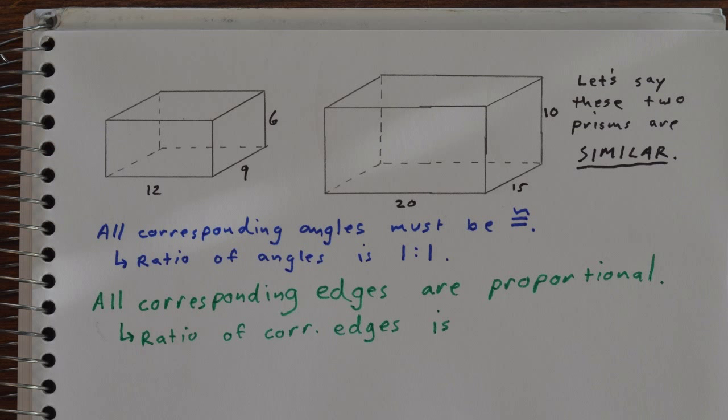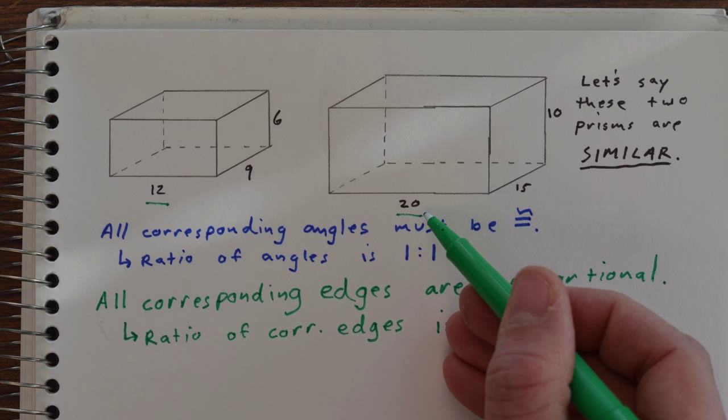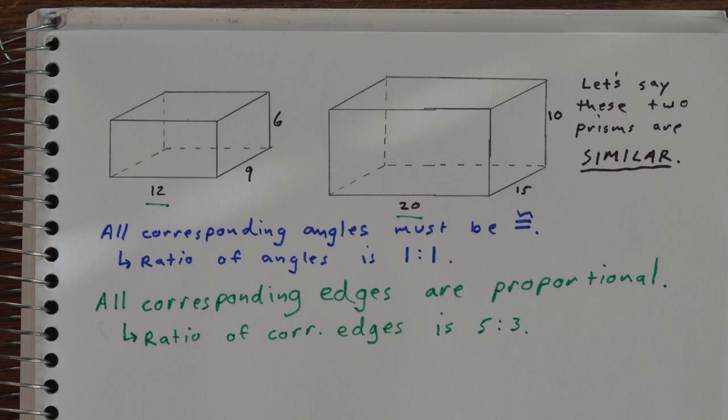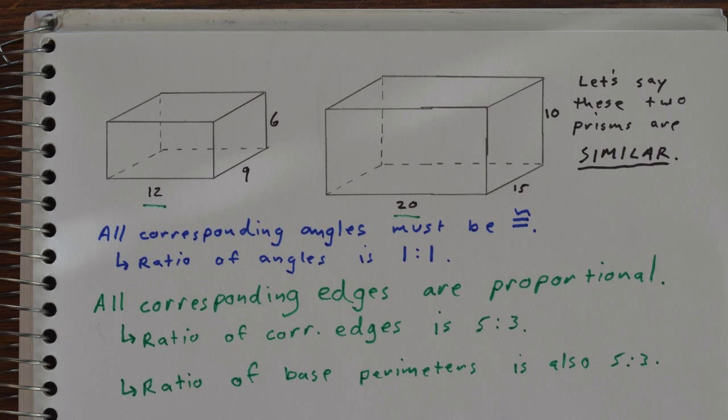So that scale factor, or the ratio of corresponding edges, let's take a look at one pair. I've got 12 and 20, and we typically do scale factor by shape on the right divided by left, or left divided by right. So in this case we'll do right divided by left, 20 divided by 12, which gives us a scale factor of 5 to 3. The ratio of the base perimeters will also follow that same scale factor, because all linear measurements will be proportional in that 5 to 3 ratio.